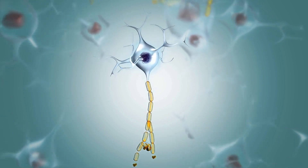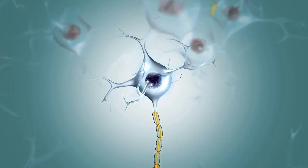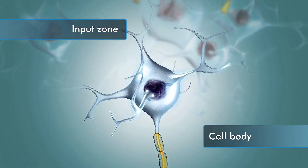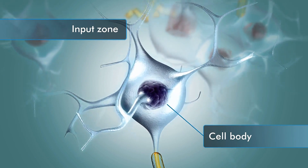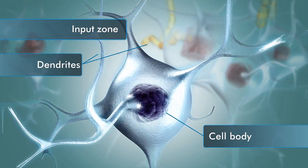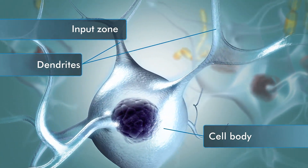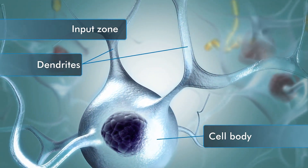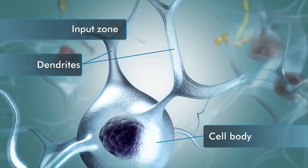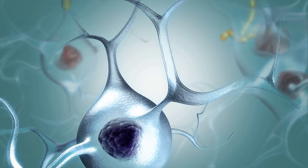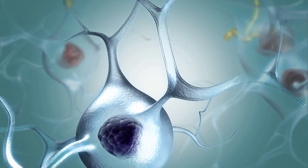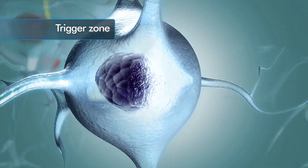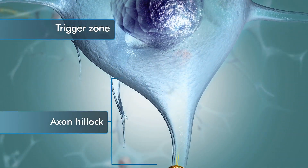The neuron can be divided into three zones. The input zone, consisting of the cell body and extensions known as dendrites, has chemically gated channels in its membrane to receive stimuli from other neurons as graded potentials. These graded potentials move toward the trigger zone at the axon hillock.